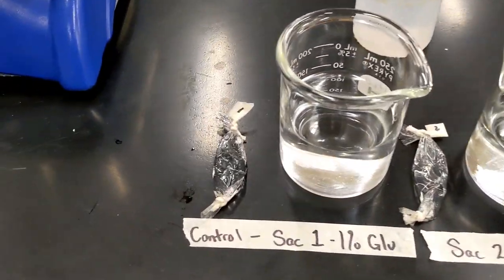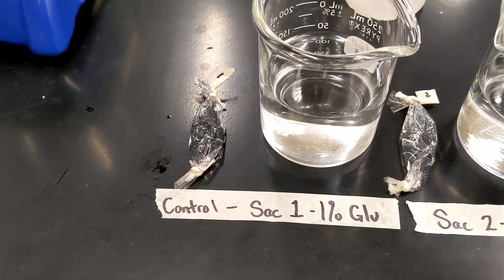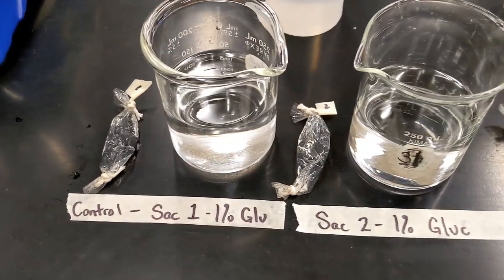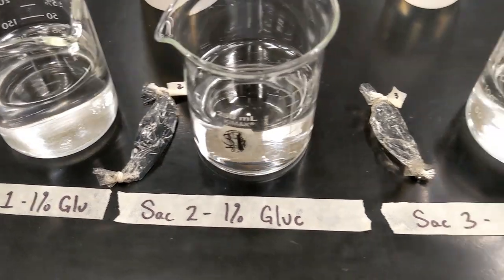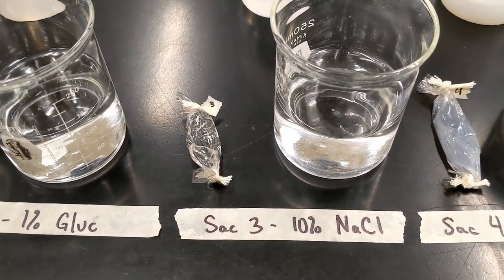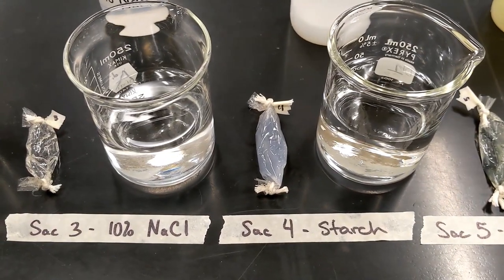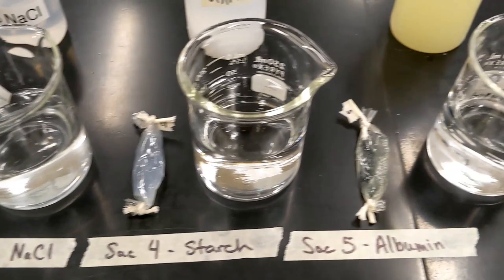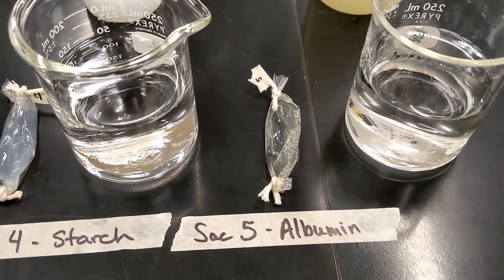Now for bag one, you will see bag one contains one percent glucose solution. Bag two contains a one percent glucose solution. Bag three contains a ten percent sodium chloride solution. Bag four contains a starch solution, and bag five contains an albumin solution.